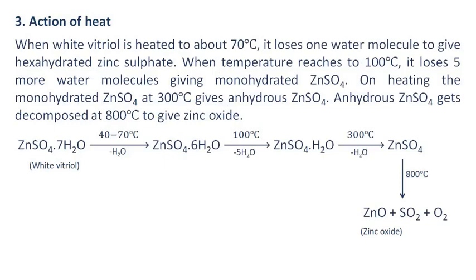Action of Heat: When white vitriol is heated to about 70 degrees Celsius, it loses one water molecule to give hexahydrated zinc sulfate. When the temperature reaches 100 degrees Celsius, it loses five more water molecules giving monohydrated zinc sulfate. Heating monohydrated zinc sulfate at 300 degrees Celsius gives anhydrous zinc sulfate, which decomposes at 800 degrees Celsius to give zinc oxide.